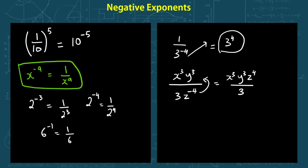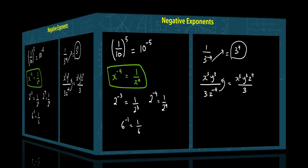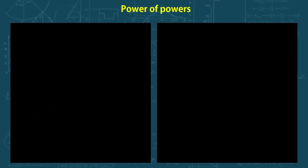Now let's look at power of powers. When we have to raise a power to a power, we simply multiply the two exponents together. For example, what if I had x to the power of 3, and now this is to the power of 4? According to the rule, this equals x to the power of 3 times 4, which is x to the power of 12.